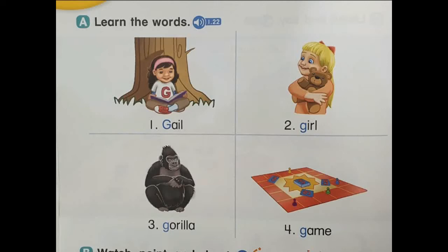Page 18, Lesson 7, G. Let's learn. A. Learn the words. G. Number 1: Gale. Number 2: Girl. Number 3: Gorilla. Number 4: Game.